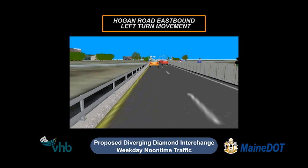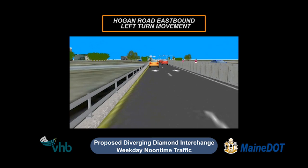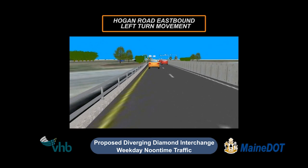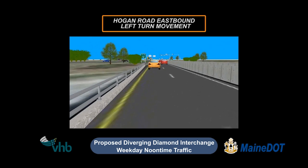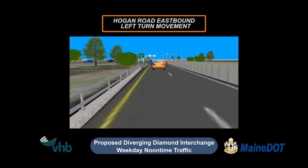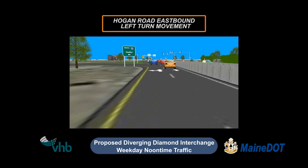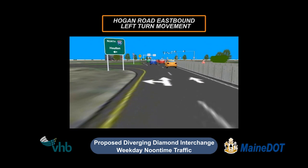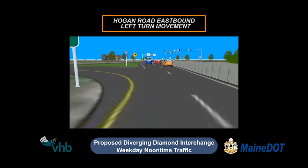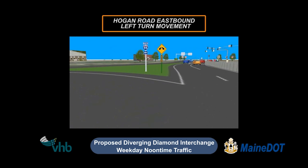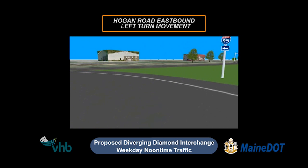Because you are on the left side of the road, you won't cross paths with traffic. This will minimize crashes at that high-crash location. Notice the ease of making the left turn onto the northbound on-ramp.